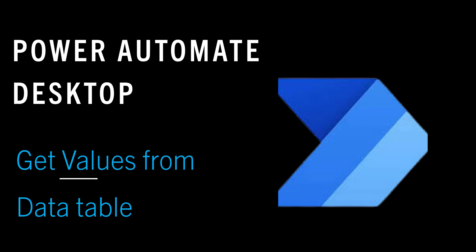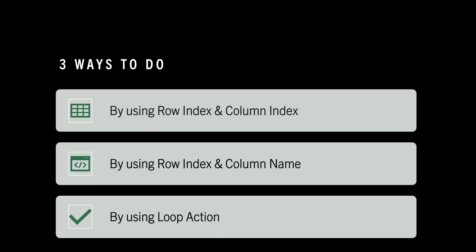Hello all, welcome back to TS Inco Technologies YouTube channel. In this video, I will cover how to get values from a data table using a Power Automate desktop flow. This video will cover three ways to do that: how to get data table values by using the row index and column index, by using a row index and column name, and by using loop actions.